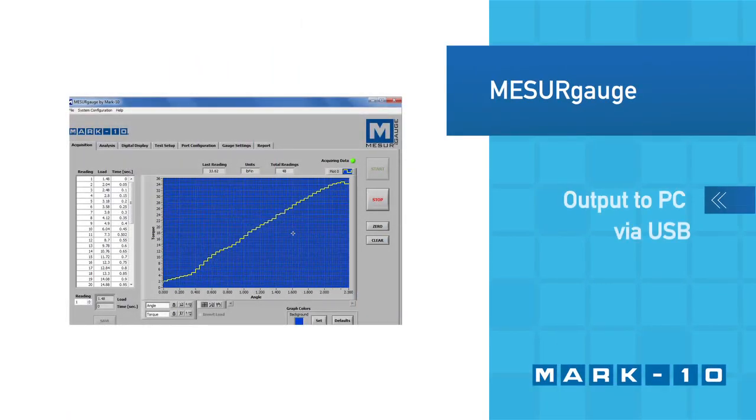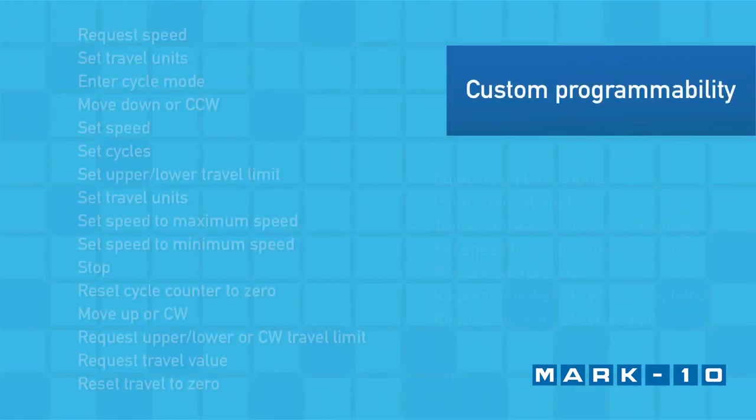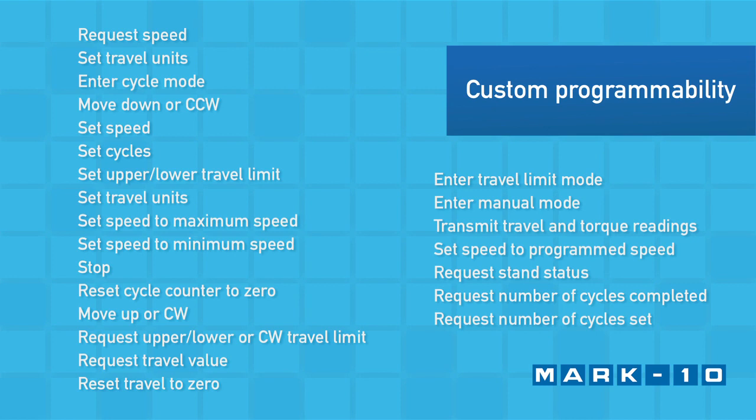Torque and angle data can be output to a PC via USB for graphing and reporting. Custom applications can also be developed utilizing its ASCII command set.